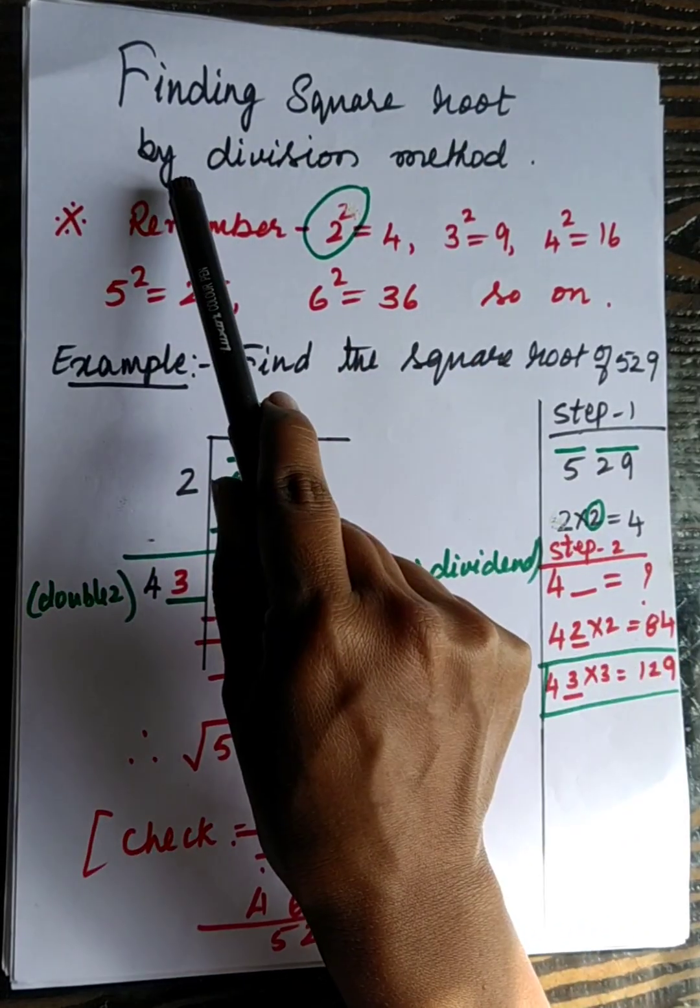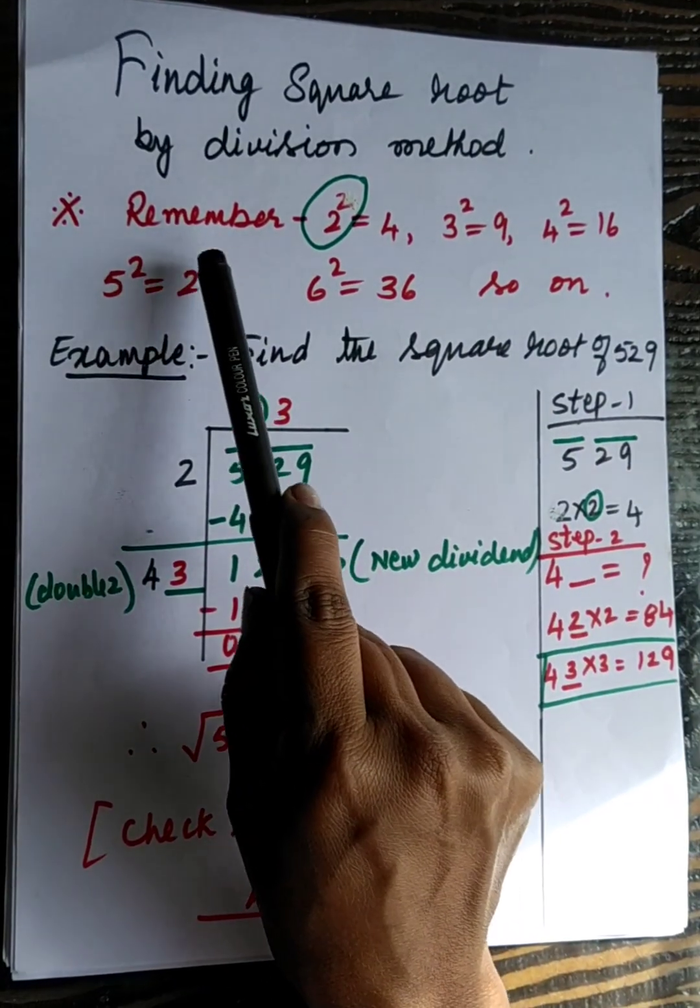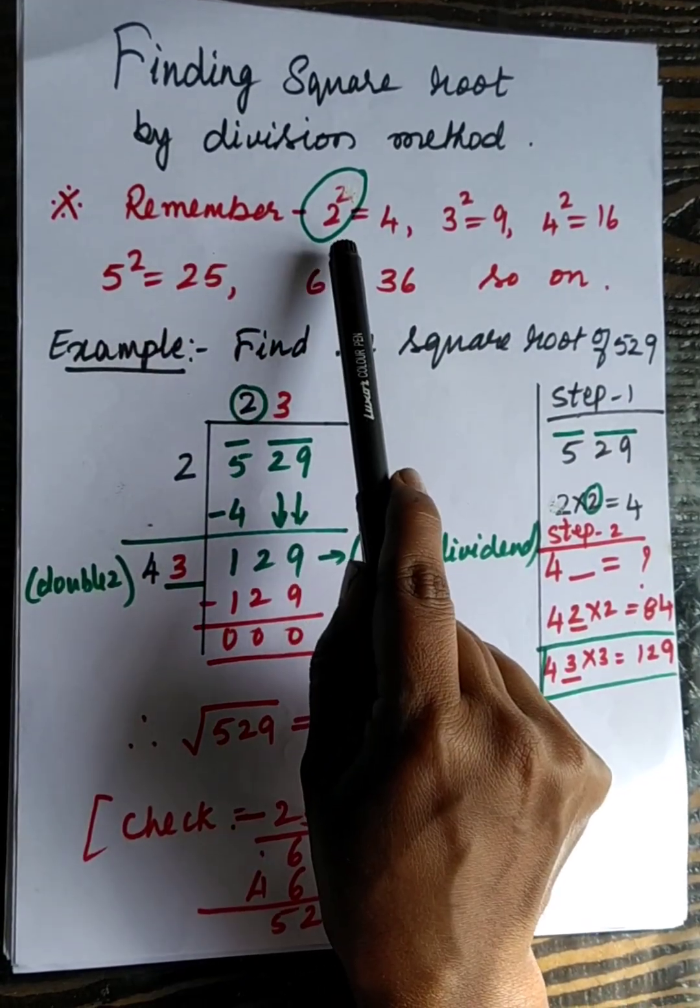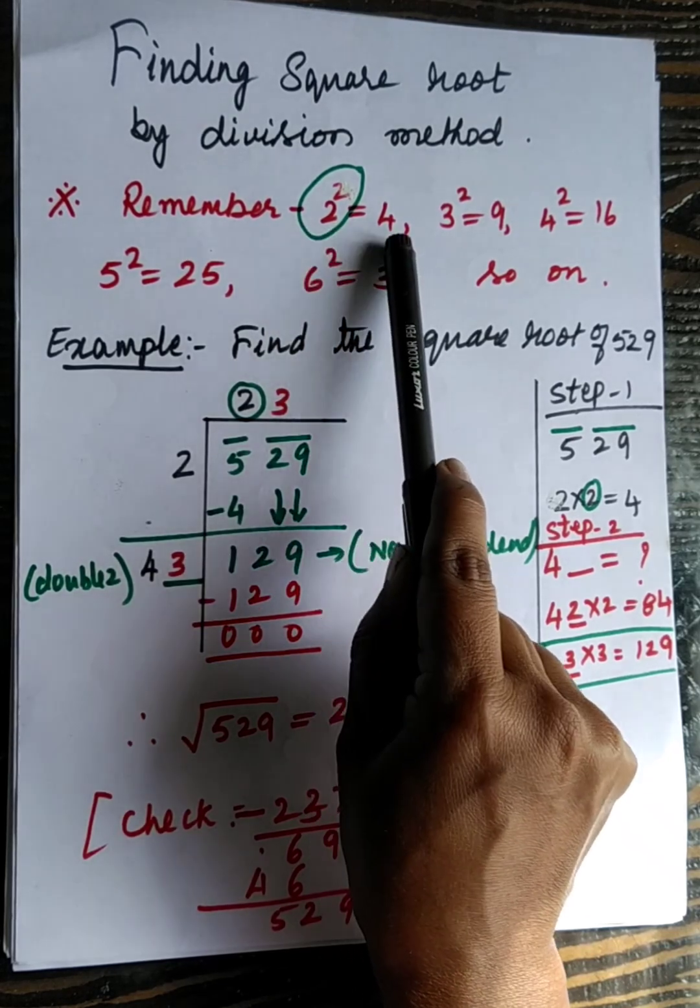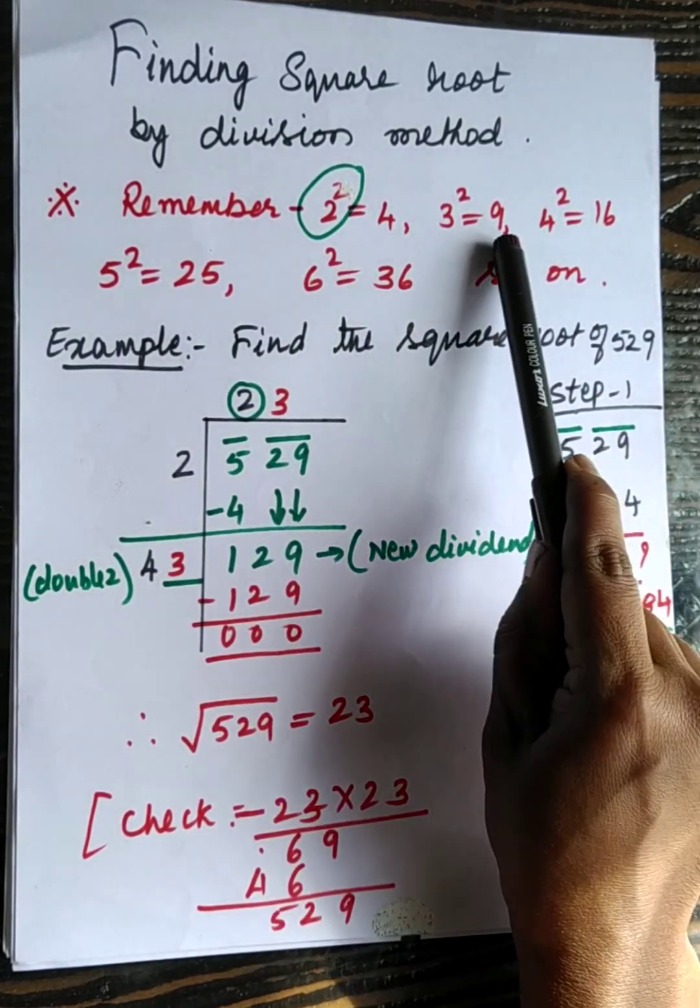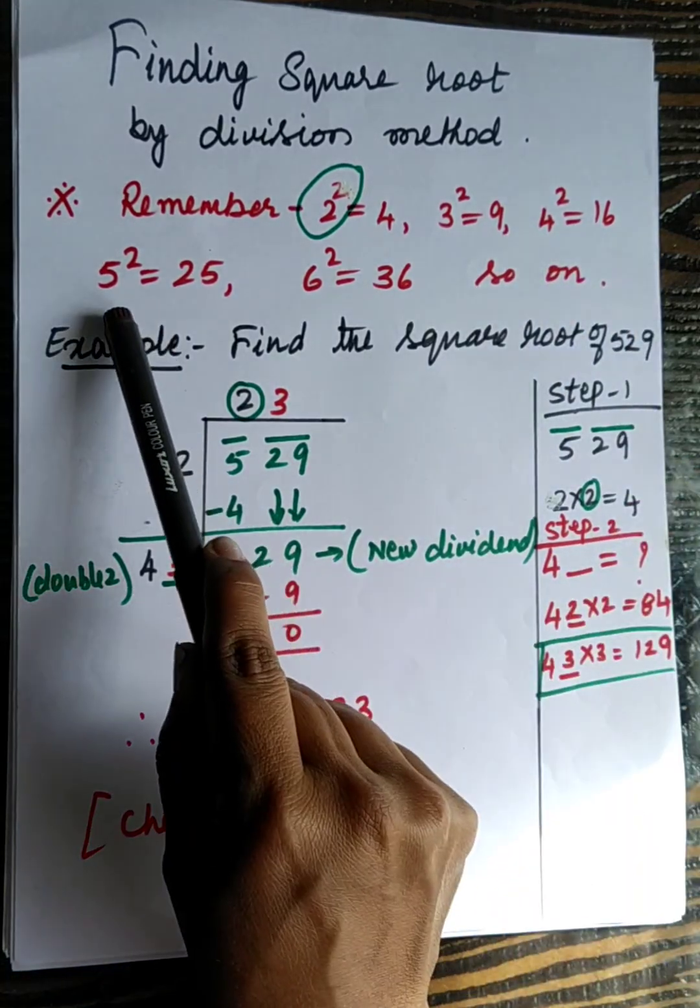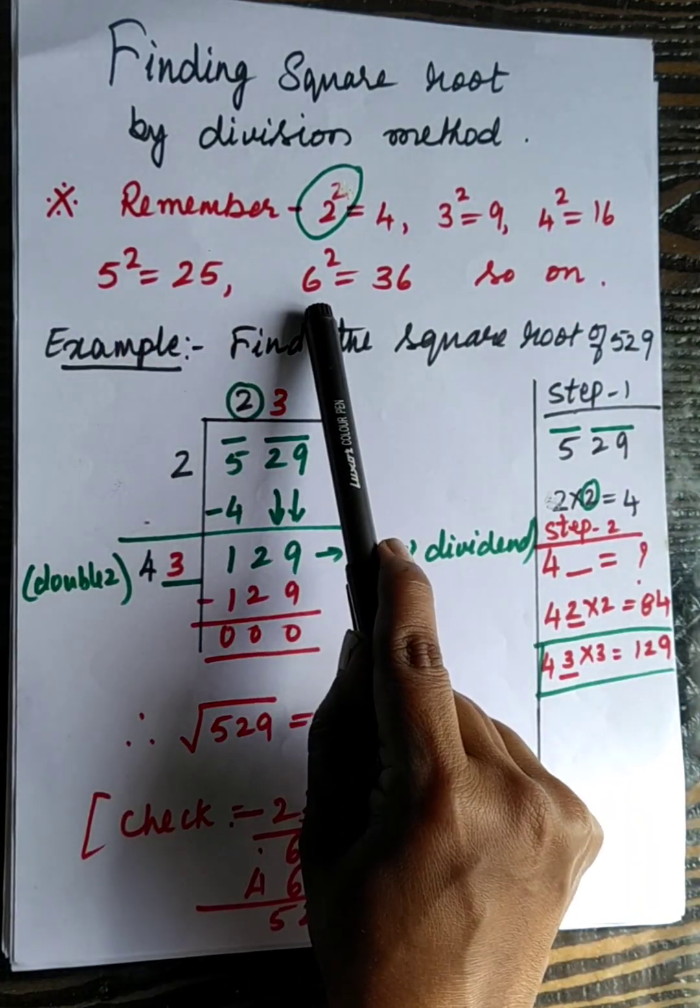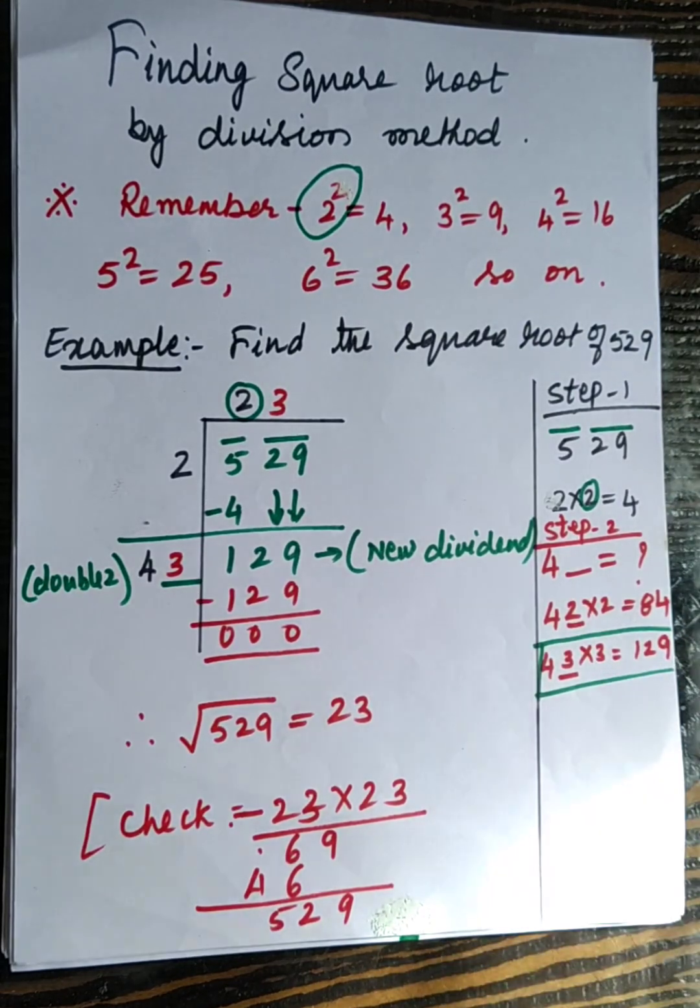Finding the square root of any number by division method. For that you need to remember what is the square of these numbers: square of 2 is 4, square of 3 is 9, square of 4 is 16, 5 is 25, square of 6 is 36 and so on. At least up to 10 you should remember.